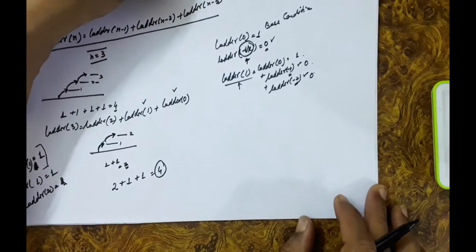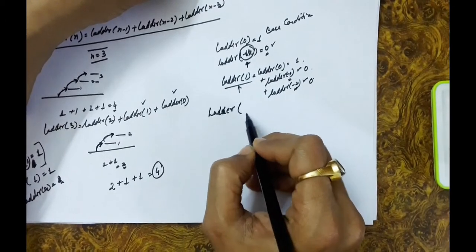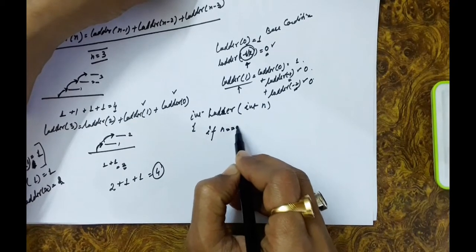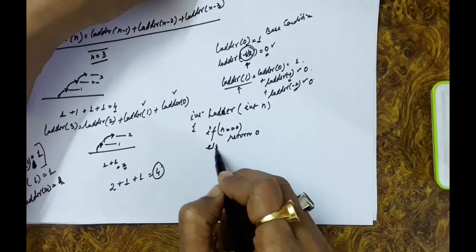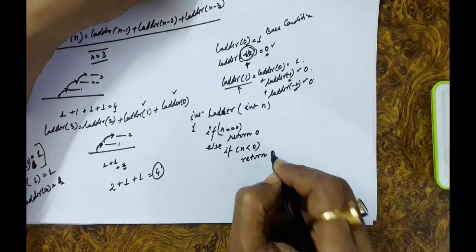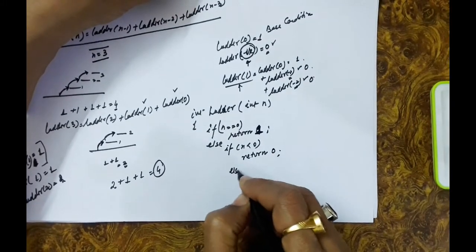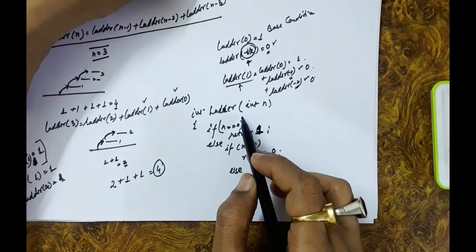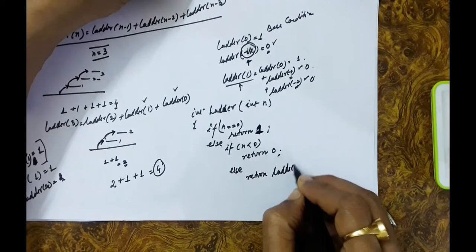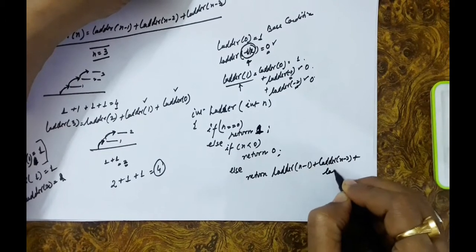Now let us write the recursive function. We will first write the recursive function and then convert it to the dynamic programming solution using memoization. A value n is passed. If n is less than zero, we return 0. If n equals zero, we return 1 because there is one way to reach the destination. Otherwise, we return ladder(n-1) plus ladder(n-2) plus ladder(n-3). This is much similar to the Fibonacci series that we have seen.